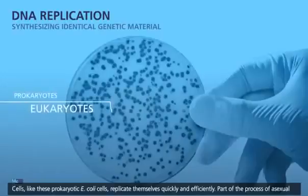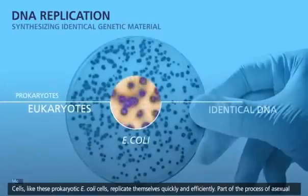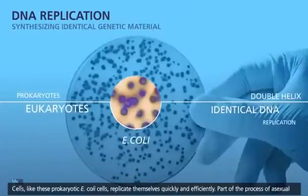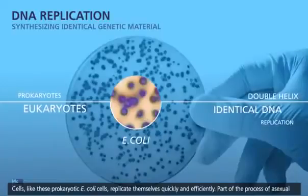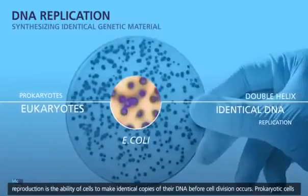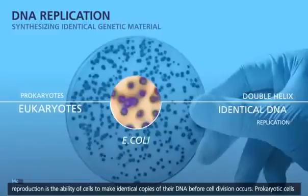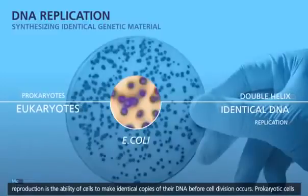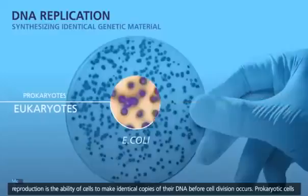Cells like these prokaryotic E. coli cells replicate themselves quickly and efficiently. Part of the process of asexual reproduction is the ability of cells to make identical copies of their DNA before cell division occurs.